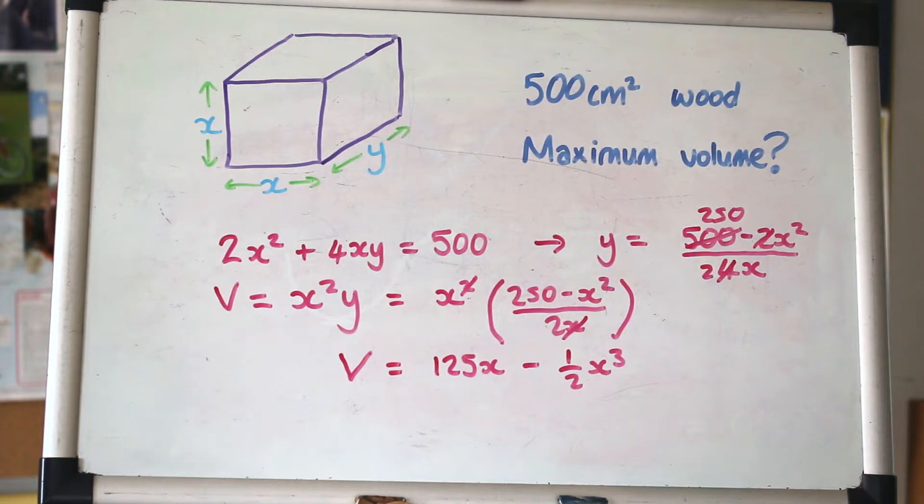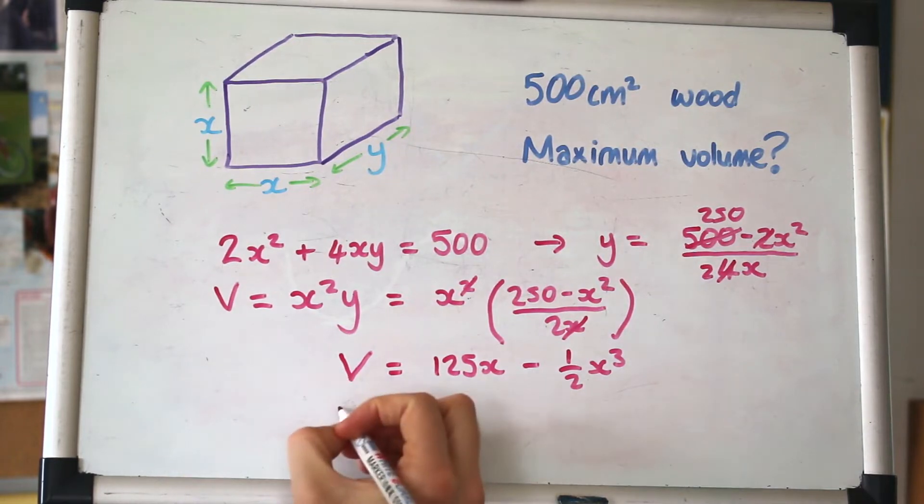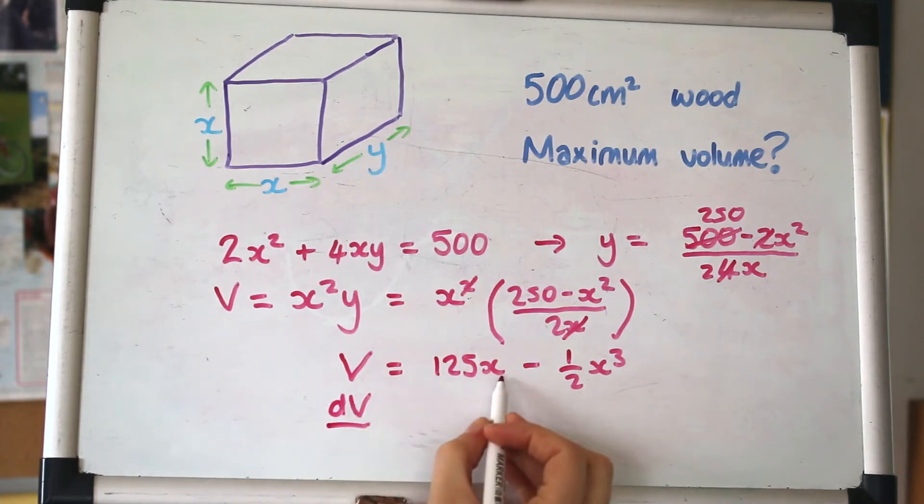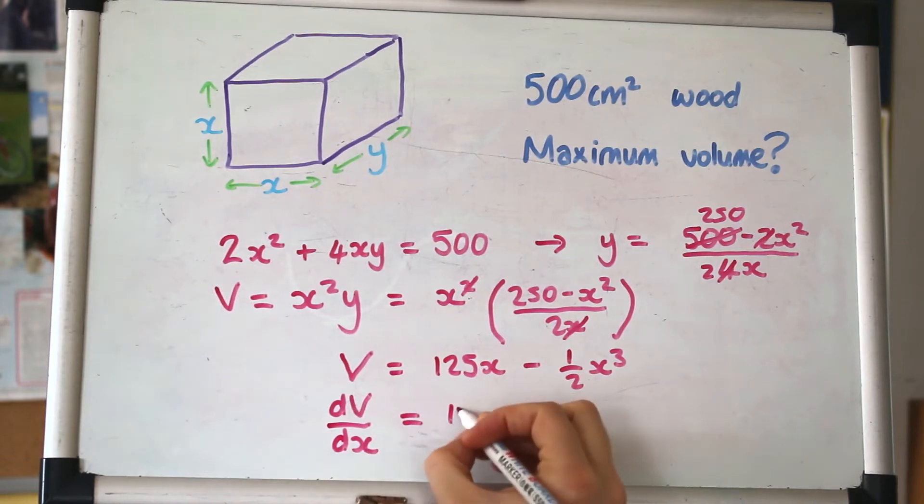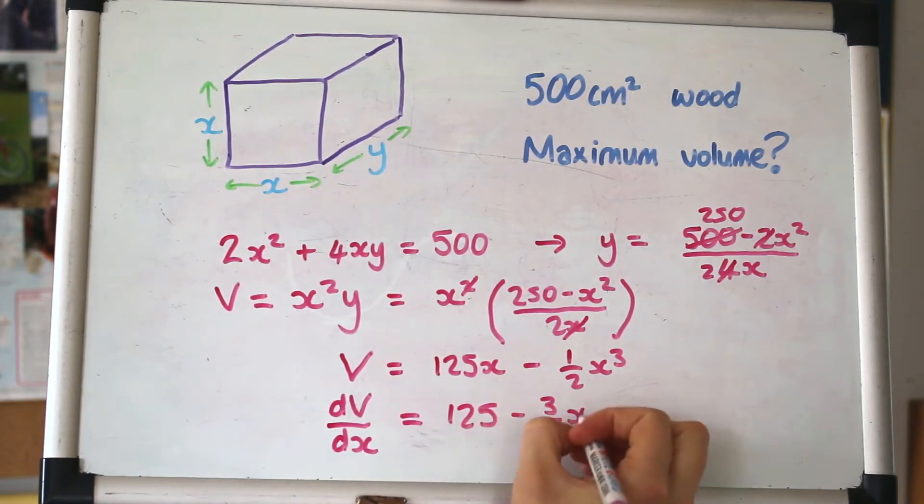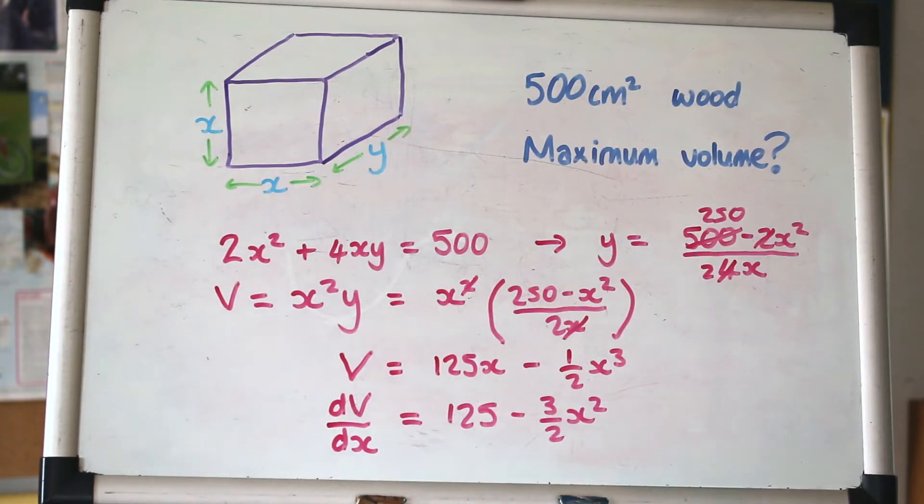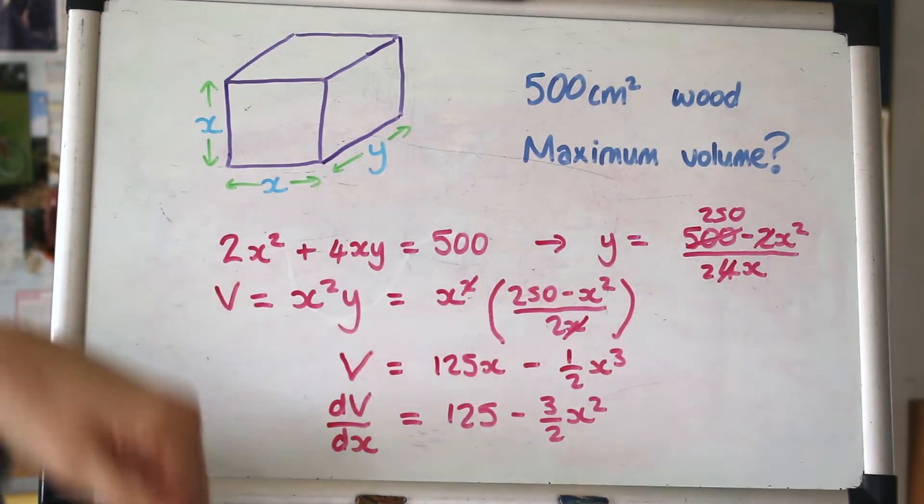We can use this first equation to make y the subject and then substitute that into this one here. Rearranging to make y the subject, we get y = (500 - 2x²)/(4x). We can substitute that in, replacing y with all of that stuff.